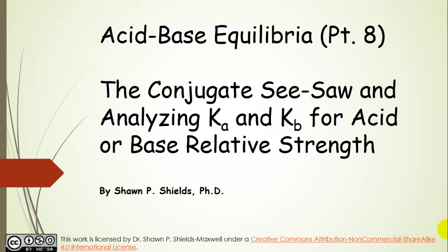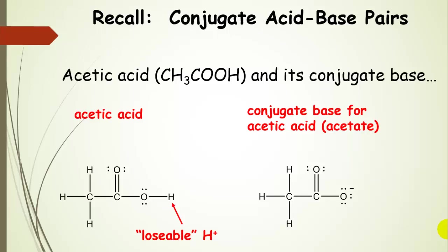The conjugate seesaw and analyzing Ka and Kb for acid or base relative strength. Let's remind ourselves of conjugate acid-base pairs. Last time we talked about acetic acid and its conjugate base acetate. Here's acetic acid with the losable proton — that's the one donated to water to produce hydronium — leaving us with the conjugate base acetate, basically without that H+.